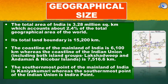The total area of India is 3.28 million km², which accounts for about 2.4% of the total geographical area of the world. Its total land boundary is 15,200 km. The coastline of India is 6,100 km, whereas the coastline of the Indian Union including both island groups, Lakshadweep and Andaman and Nicobar Islands, is 7,516.6 km. The southernmost point of the mainland of India is Kanyakumari, whereas the southernmost point of the Indian Union is Indira Point.